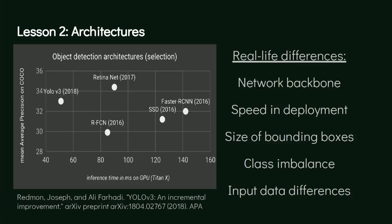There are certain architectures — this is really just a small selection — and the axis here is inference time in milliseconds on a GPU. For example, Faster R-CNN used to be state of the art in 2016: really slow, but quite good at the time.